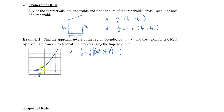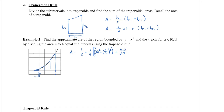Our second trapezoid has a left side of one-quarter squared and a right side of one-half squared. For the third trapezoid, the left side has an x value of one-half so we square that, and then the right side is three-quarters, all squared.